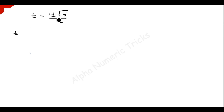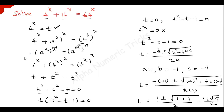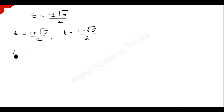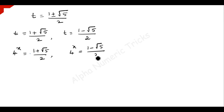So we have two possible solutions: t equals (1 plus square root of 5) over 2, and t equals (1 minus square root of 5) over 2. Since 4 to the power x is always positive, and (1 minus square root of 5) over 2 is negative, that solution is not possible.